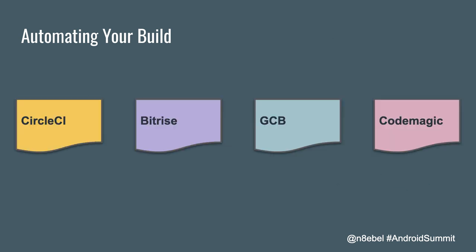These days there are a lot of CI providers out there that can run a build for you, and they're all quite easy to set up. Examples include CircleCI, Bitrise, Google Cloud, Buildkite, and GitHub is even getting into this space now. You can do this right from within GitHub or GitLab. In this talk, all examples will focus on CircleCI, which is a platform I've used on a number of projects and am pretty familiar with.